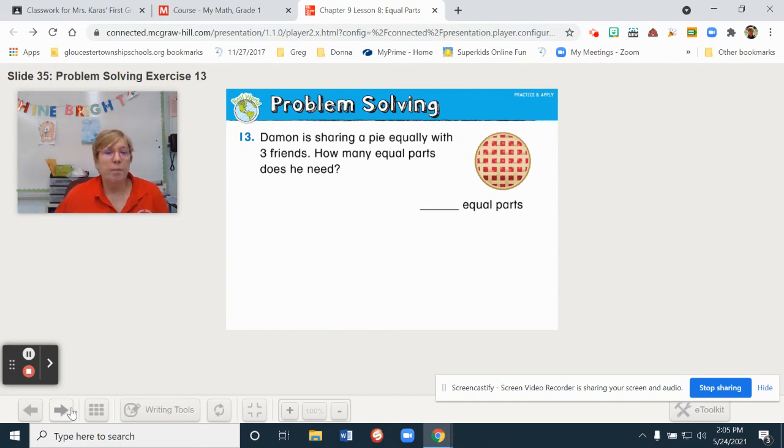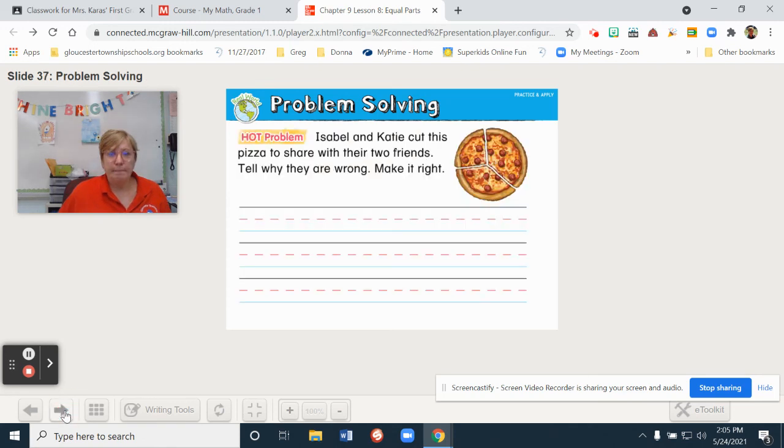Damon is sharing a pie equally with three friends. How many equal parts does he need? Well, let's think. There's three friends and Damon. How many equal parts? Let's pause and solve now. So, if you had Damon plus three friends, you would have four, correct? Let's see. That's right. Four equal parts.